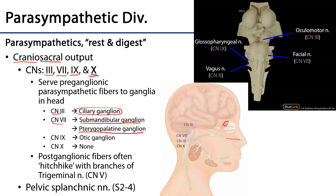Cranial nerve 9 provides the pre-ganglionic parasympathetic fibers to the otic ganglion, which is a parasympathetic ganglion within the infratemporal fossa that is going to supply the innervation to the parotid gland, which is another of the salivary glands.